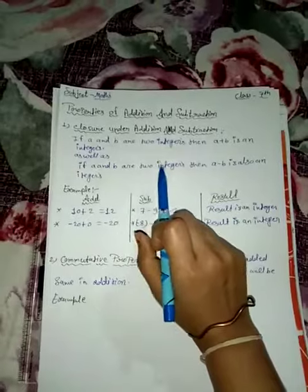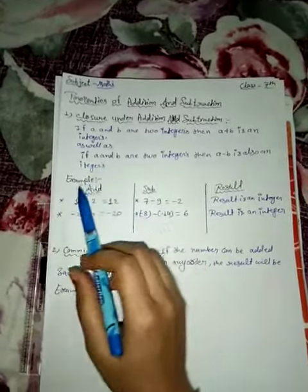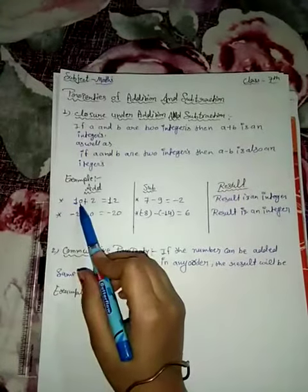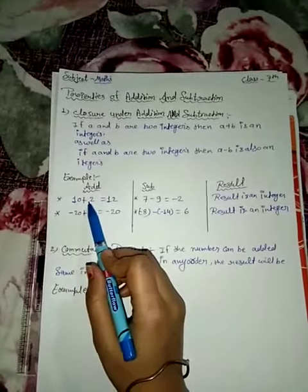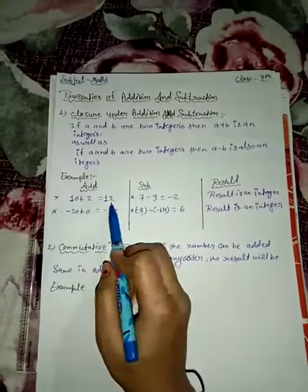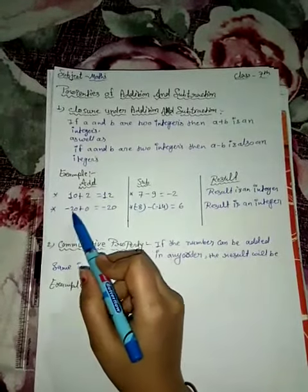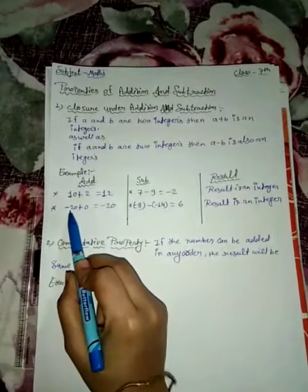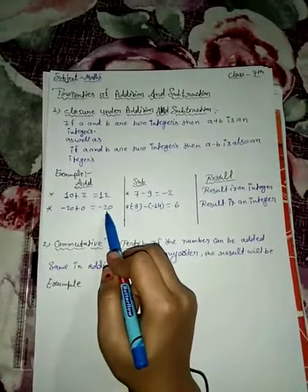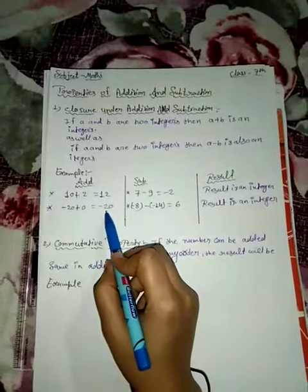Let's take examples. 10 plus 2: 10 is a positive integer and 2 is also a positive integer. When we add them, 10 plus 2 equals 12. Another example: minus 20 plus 0, so minus 20 is an integer and 0 is also an integer. When we add them, the answer is minus 20. Both results are integers, one positive and one negative.